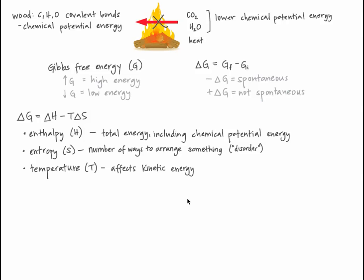Gibbs free energy takes into account three major factors: enthalpy, entropy, and temperature. The first is enthalpy, which is a measure of total energy, including chemical potential energy, as well as energy that can't be harnessed to do work. The second is entropy, which is a measure of the number of ways to arrange something, often referred to as disorder. Entropy is a kind of energy that cannot be harnessed to do work, so it's subtracted from enthalpy to determine free energy. Finally, there's temperature, which affects a molecule's kinetic energy.